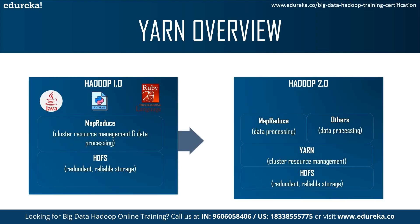YARN is a core component of Hadoop 2 and is added to provide improved performance in the Hadoop world. YARN is the next generation of Hadoop computing platform which offers various advantages compared to the classic MapReduce engine in the first version of Hadoop. Now let us see in detail what YARN is and what advantages it offers over classic MapReduce.